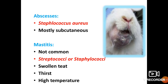Next is abscess, which is mostly subcutaneous and caused by Staphylococcus aureus. Mastitis is not common and is caused by either streptococci or staphylococci; the affected gland will be swollen and the affected animal will show thirst and high temperature.